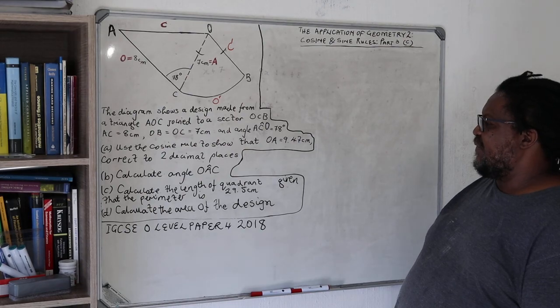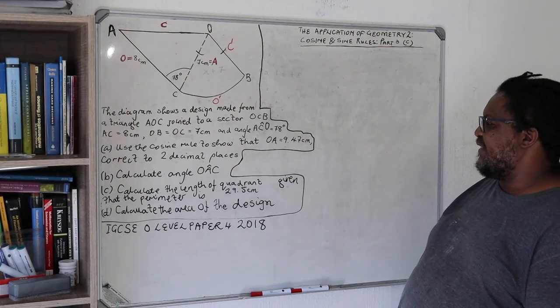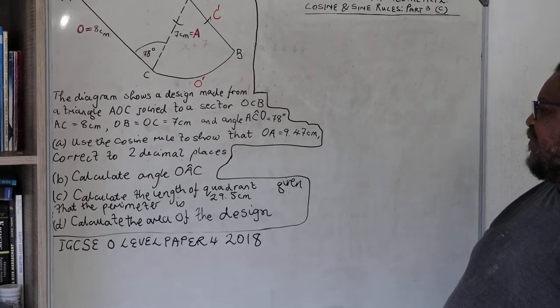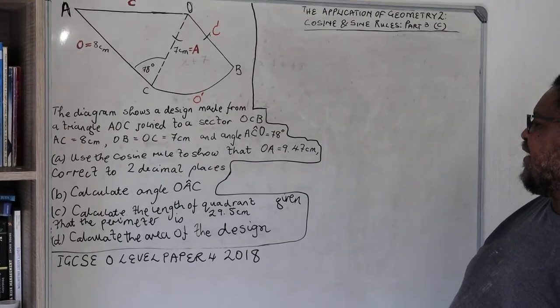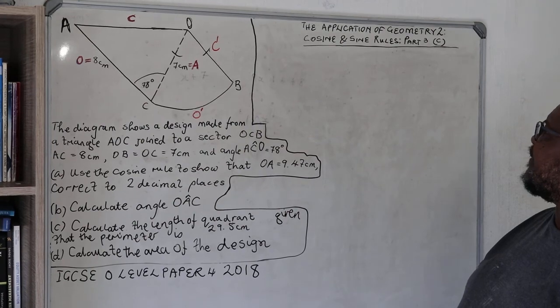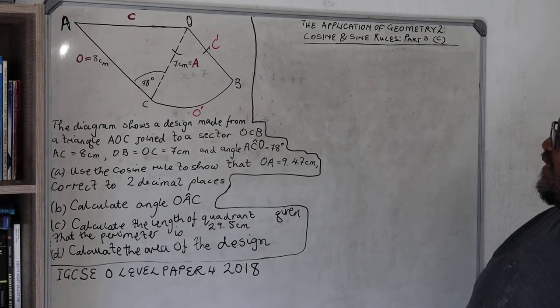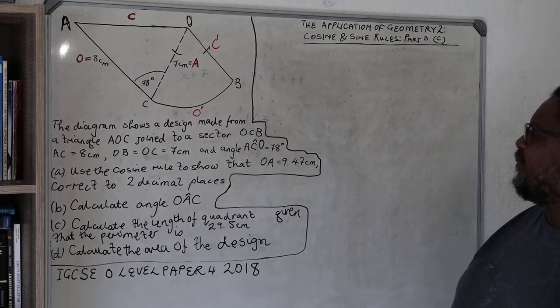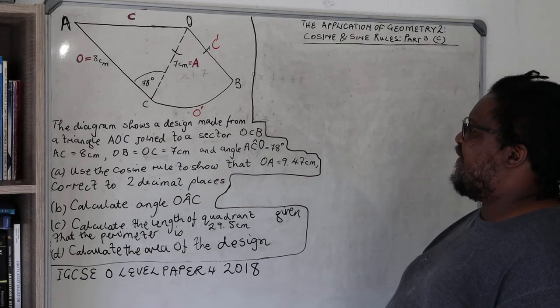We are answering question C which requires us to calculate the length of the quadrant given that the perimeter of the design is 29.5 centimeters. The perimeter is the length of the whole design.